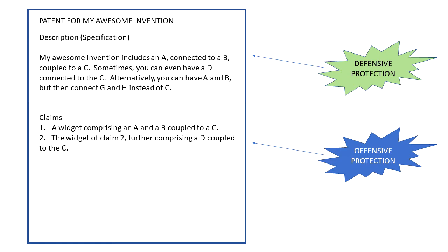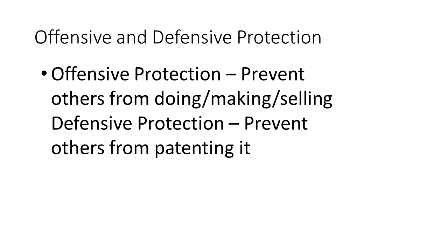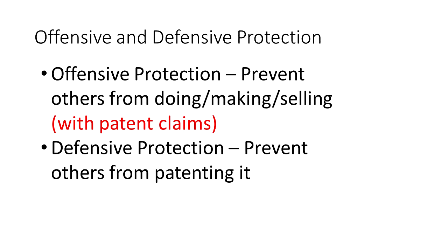The claims provide what I call offensive protection, whereas things in the written description provide what I call defensive protection. We currently have two embodiments that are offensively protected. Offensive protection means to prevent others from making, selling, or using your invention — you have the right to block others from doing it as long as your patent is in force. That is what the claims are for; the claims let you prevent others from doing it.